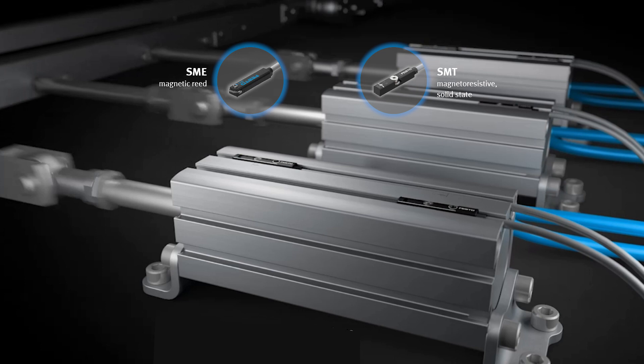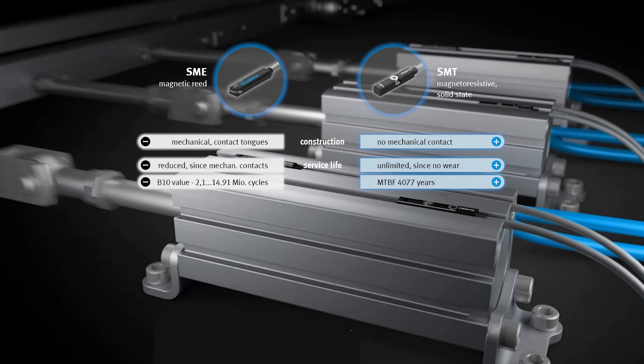In summary, both proximity sensors are designed differently. With the SME, the contact is mechanical. With the SMT it is without contact. This has an effect on the service life. With the SME, there is more wear due to the mechanical contact. This reduces the service life.